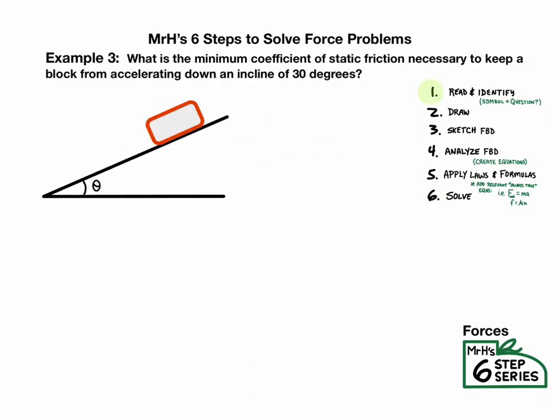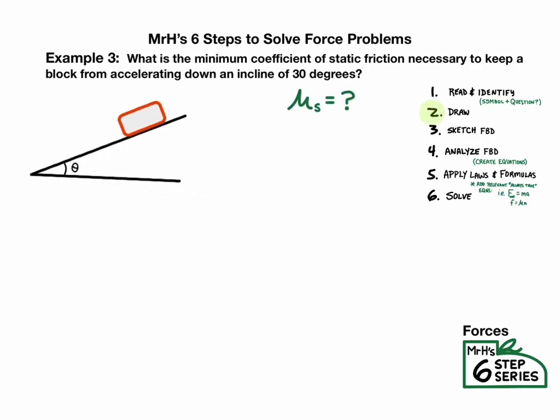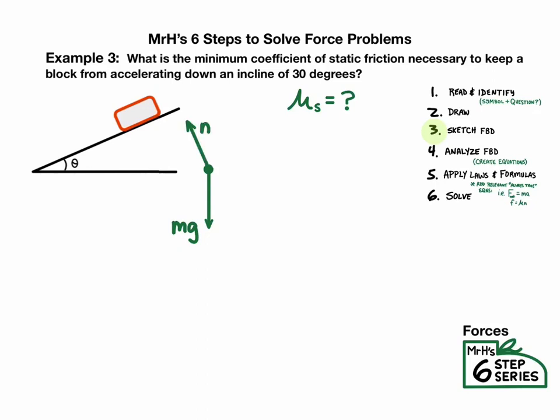Here we have a block on a ramp that we have to figure out the coefficient of friction necessary to keep it from sliding. So mu static equals question mark for step one. Step two is a picture. Step three, FBD, we have invisible gravity down. We're going to have normal force perpendicular to the surface, and we're going to need a frictional force uphill. Step four is to analyze the free body diagram. So let's consider the direction of perpendicular to the ramp. We should have no acceleration, and therefore any forces along that direction cancel out. So n equals mg cosine theta. Now let's look at uphill and downhill. Downhill we have mg sine theta, and uphill we have static friction. So those two have to be equal.